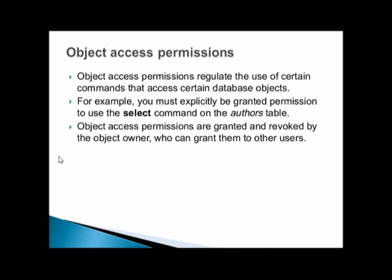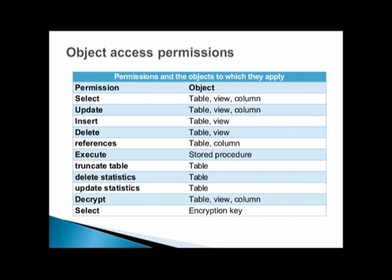Object access permissions regulate the use of certain commands that access certain database objects. For example, you must explicitly be granted permission to use the SELECT statement on the authors table. Object access permissions are granted and revoked by the object owner, who can grant them to other users. These are object-specific permissions.